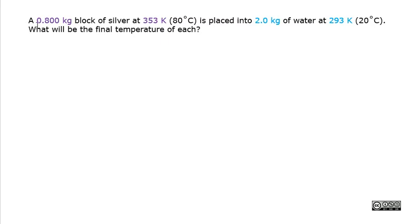A 0.8 kilogram block of silver at 353 kelvins is placed into 2 kilograms of water at 293 kelvins. What will be the final temperature of each?